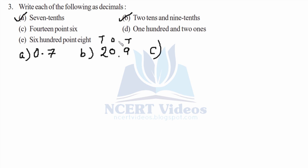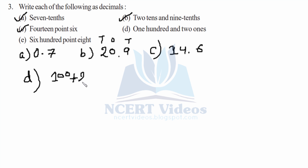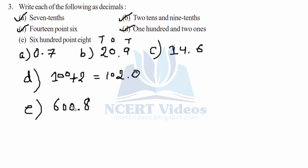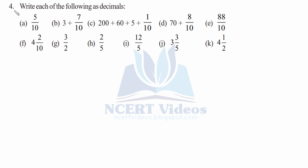Part C: 14.6 — it is straightforward, simply 14.6. Part D: one hundred and two ones. First we write one hundred, then we have two ones, so that gives us 102.0. Part E: six hundred plus 0.8 — first we write six hundred, then add point eight, giving us 600.8.